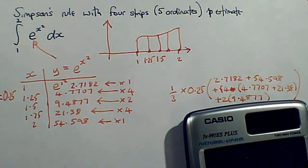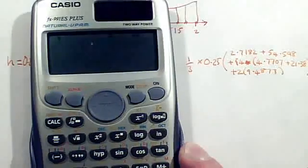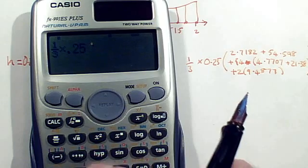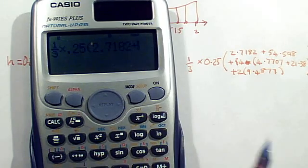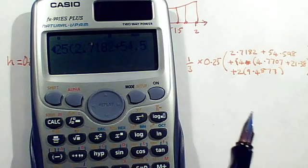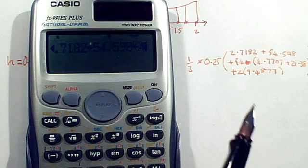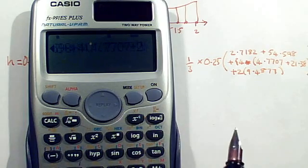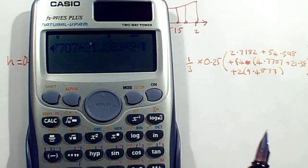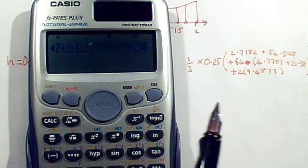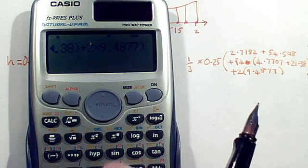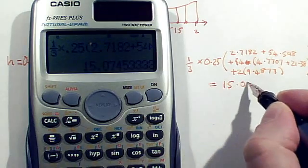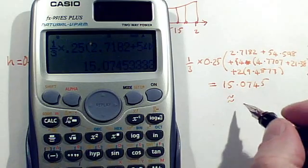So I'm going to do that calculation. So I'm going to go into an ordinary mode on my calculator. So a third times 0.25 times 2.7182 plus 54.598. Plus four times, open a bracket, with 4.7707 plus 21.38. Close that bracket. Plus two times 9.4877. Close the big bracket. I think that's all the brackets closed. Equals. And it's giving me an answer of 15.0745. But you normally round to three significant figures, whatever the question tells you, which is 15.1 to three significant figures.